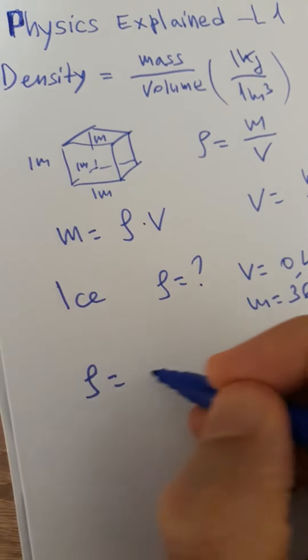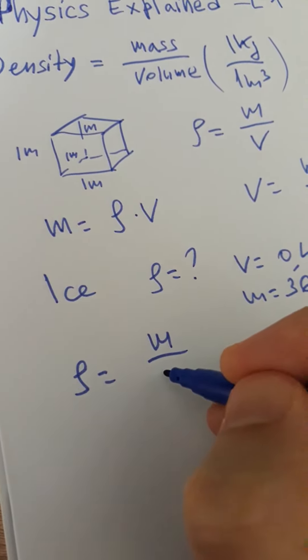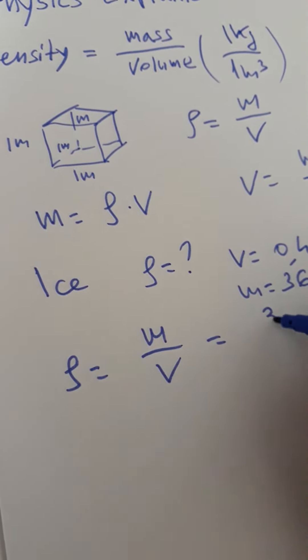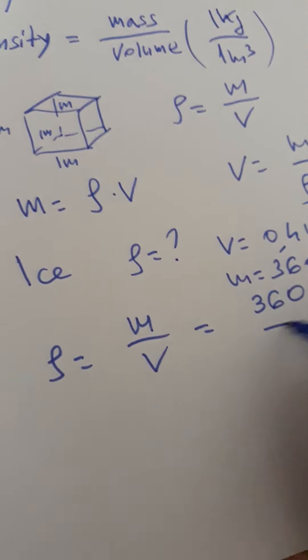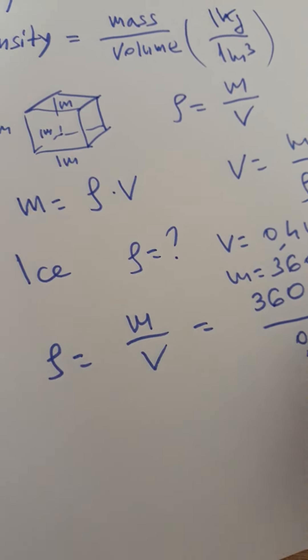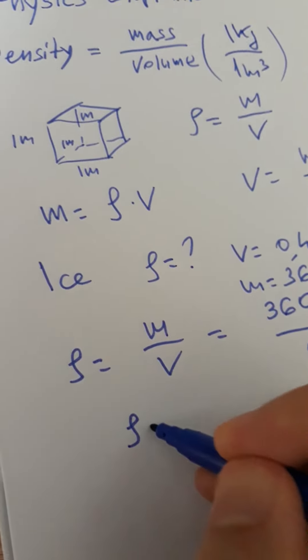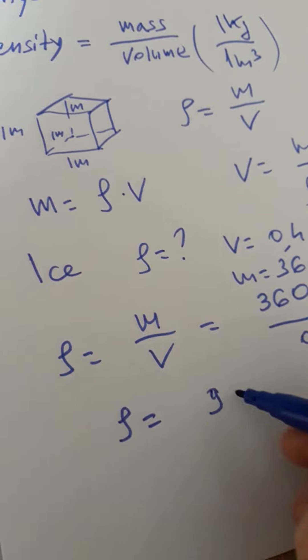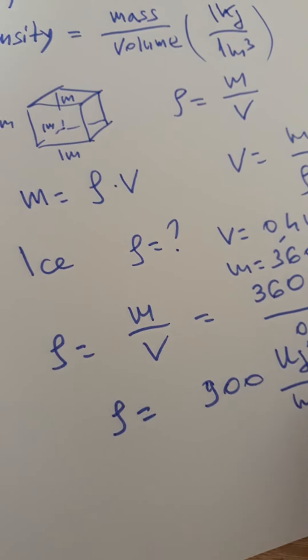Rho is m over V. So we have to divide mass of 360 kilos over 0.4 meter cubics. So for the density of ice we have 900 kilos over meter cubic.